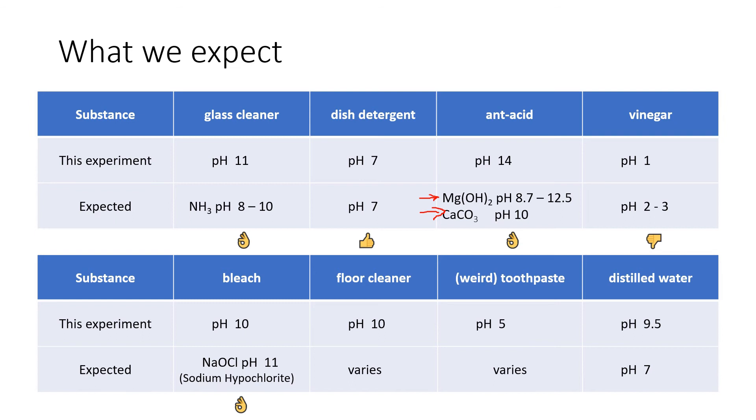For floor cleaner and toothpaste, the pH levels of these can change a lot, so we don't really know if they're good or bad because we don't know exactly what was in our floor cleaner or our weird toothpaste. So they're okay. Finally, the distilled water - we got a result of about 9.5 when actually we really expect to get 7, and there's only distilled water, unlike many of the other substances. This is not a mixture of different chemicals, this should be one chemical, H2O, and that is pretty much the very definition of pH 7. So that's a really bad result. It shouldn't be that far off.